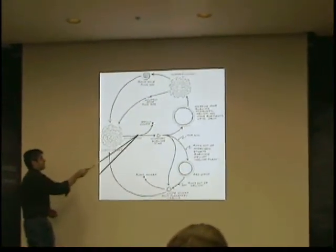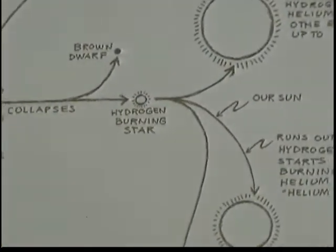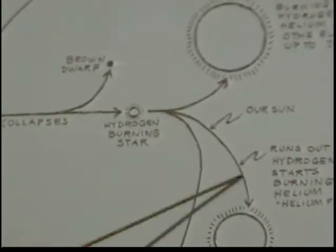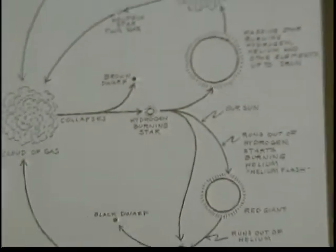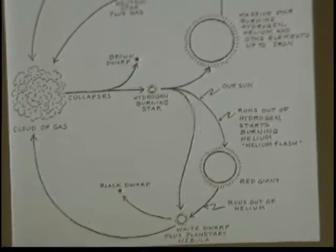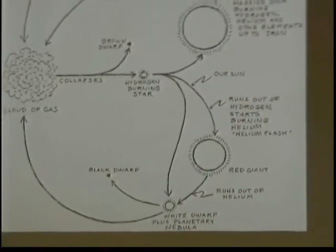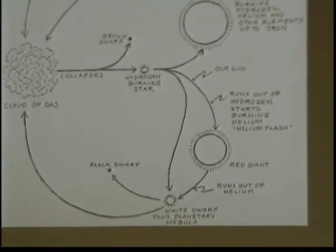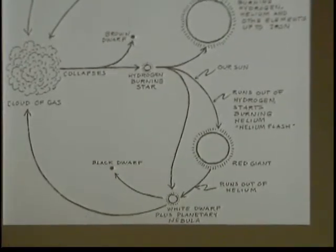If it's bigger, this cloud of gas, and it collapses into a heavier object, it becomes a hydrogen-burning star. And then depending on how big it is, it takes a range which you get to use. In the case of our Sun, it goes along this trajectory. It eventually runs out of hydrogen and starts burning helium. And then it grows. It grows into a red giant.